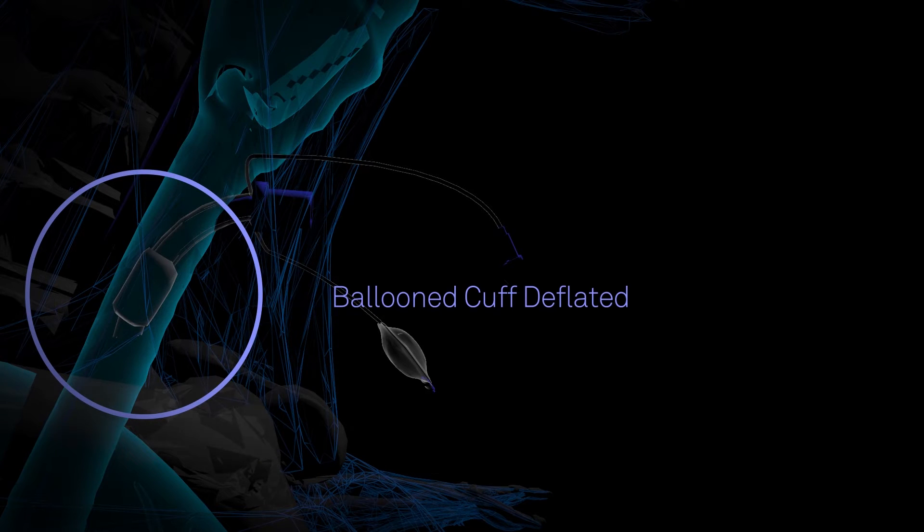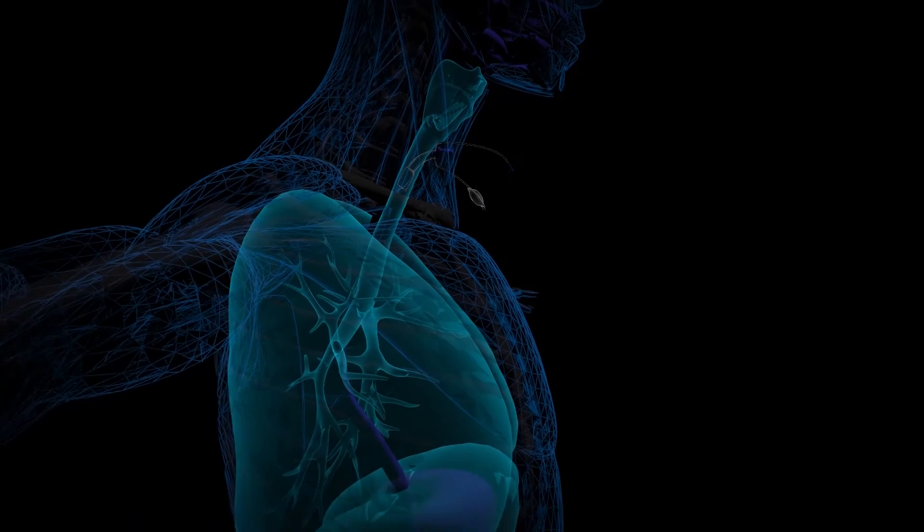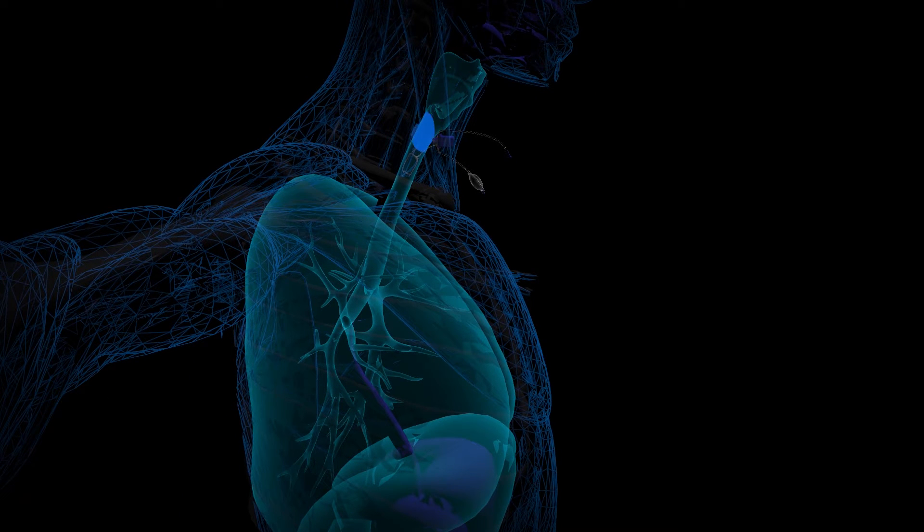With this method, the balloon cuff of the tracheostomy tube is first deflated and then the patient is fed applesauce with blue dye. If the applesauce aspirates into the lungs of the patient, they are diagnosed with dysphagia.